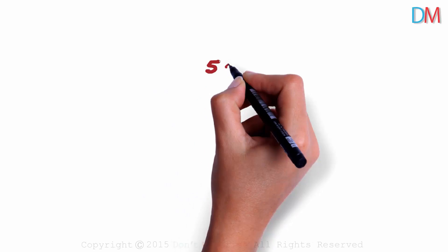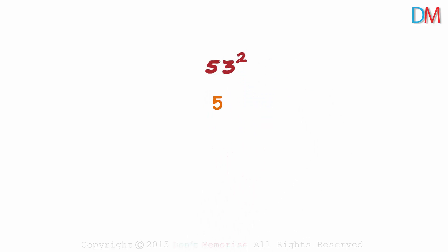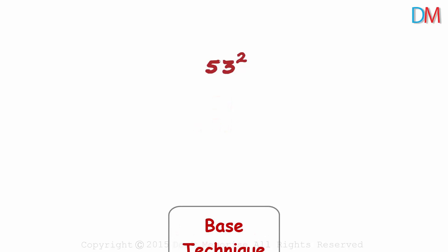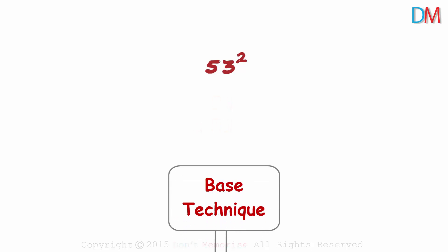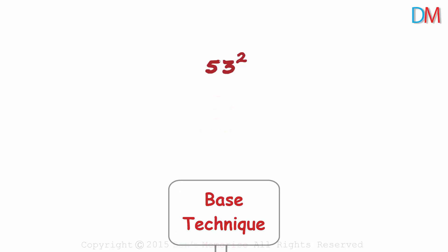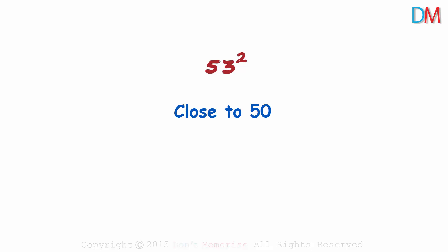What is the best way to find the square of 53? Is it by multiplying 53 with 53 traditionally? Or is it by using the base technique we had seen previously? Guess what! There's a quicker way to find the square of numbers that are close to 50.